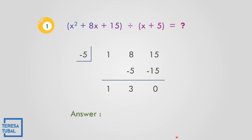So the answer: since x squared divided by x gives x, we place 1 as the coefficient of x. The quotient is x plus 3.